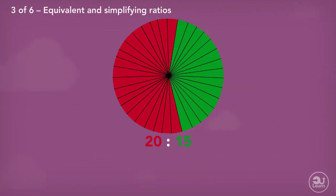Look at the circle. There are 20 red parts and 15 green parts. What is the simplified ratio to represent the same relationship between the red and green?